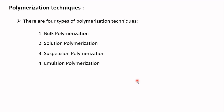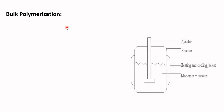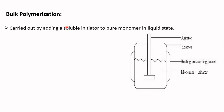The first technique is bulk polymerization, also called mass polymerization. This technique can be represented by a simple diagram. Bulk polymerization is carried out by adding a soluble initiator to pure monomer in a liquid state, meaning the monomer and initiator must both be in liquid state and soluble with one another.